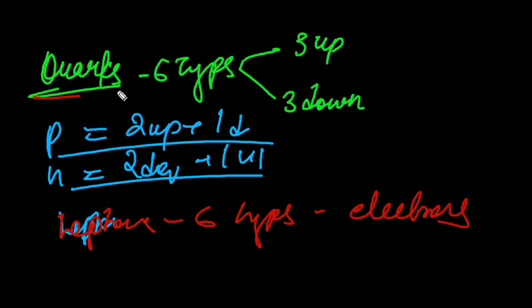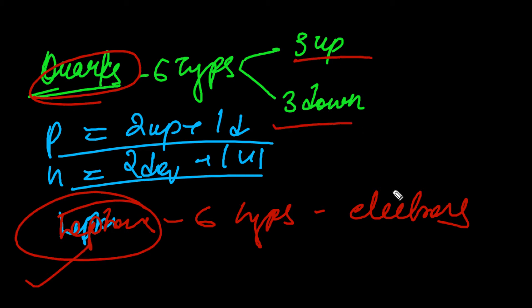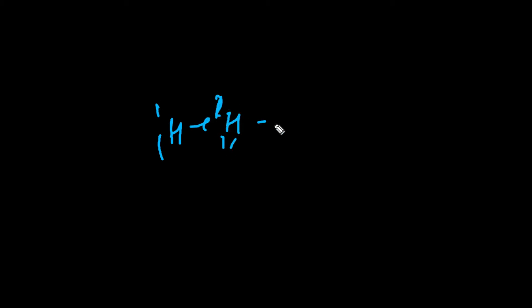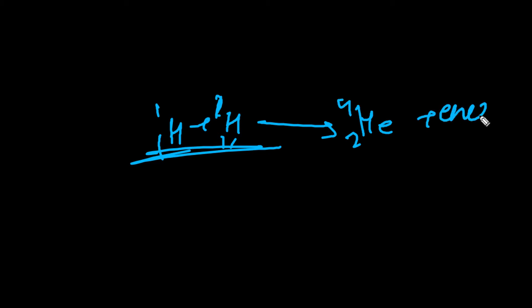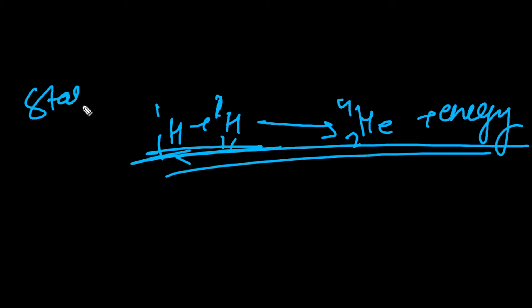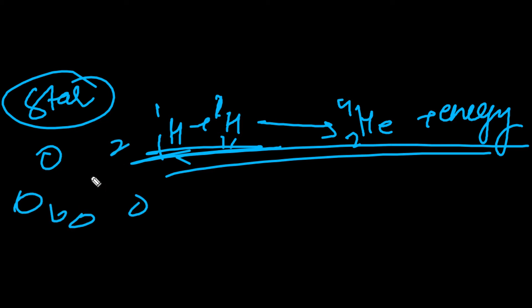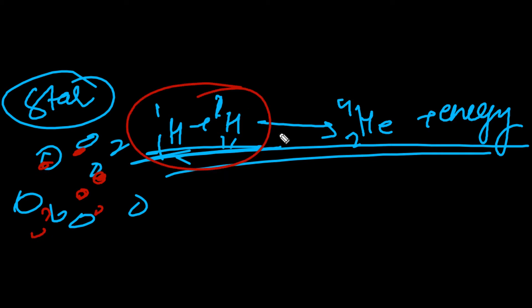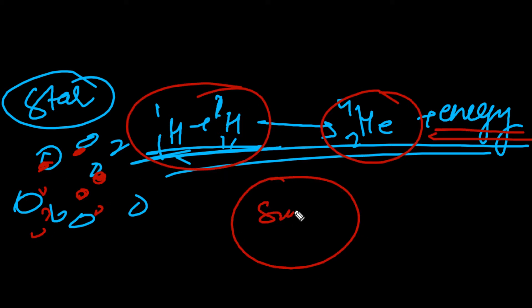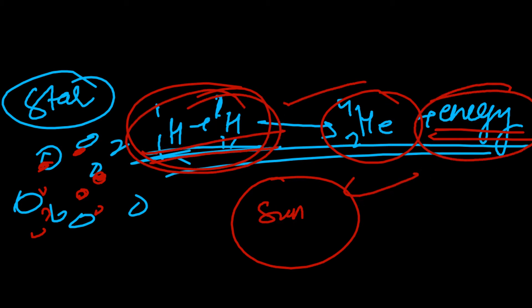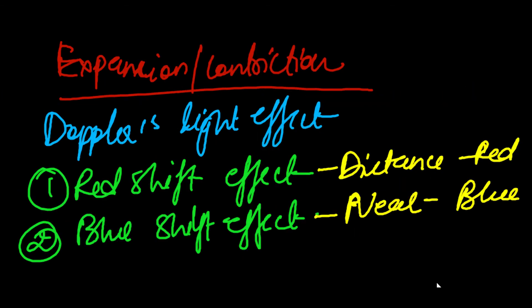From quarks, protons and neutrons are made, then hydrogen forms with 1 proton, and 2 protons give helium. Hydrogen is used to create helium through a nuclear fusion reaction. From nuclear fusion, when it is dark, light starts because hydrogen fuses and energy is generated. This is the energy generated which starts from the sun — nuclear fusion is continued and this is the energy and light generated.